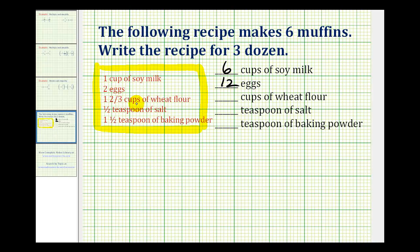To determine how much wheat flour we need, we'll have one and two-thirds times six. So we'll convert these to improper fractions. So for one and two-thirds, we'll have three times one plus two. That'll be five-thirds times six as six over one.